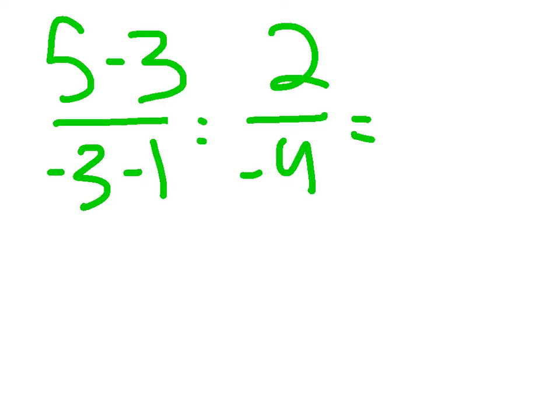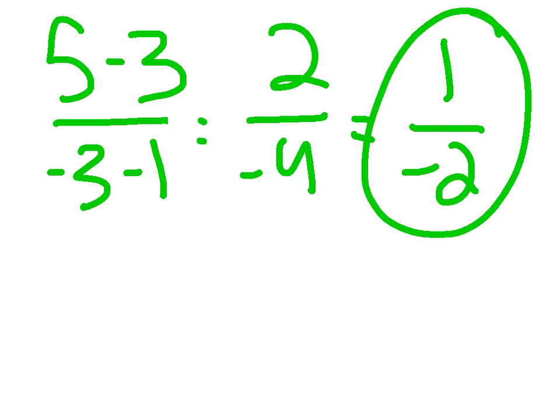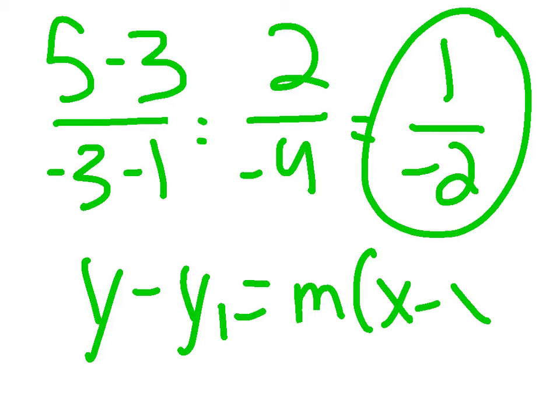which equals negative 1 over 2, simplified. You want to put this into point-slope form, which is y minus y₁ equals m times x minus x₁.